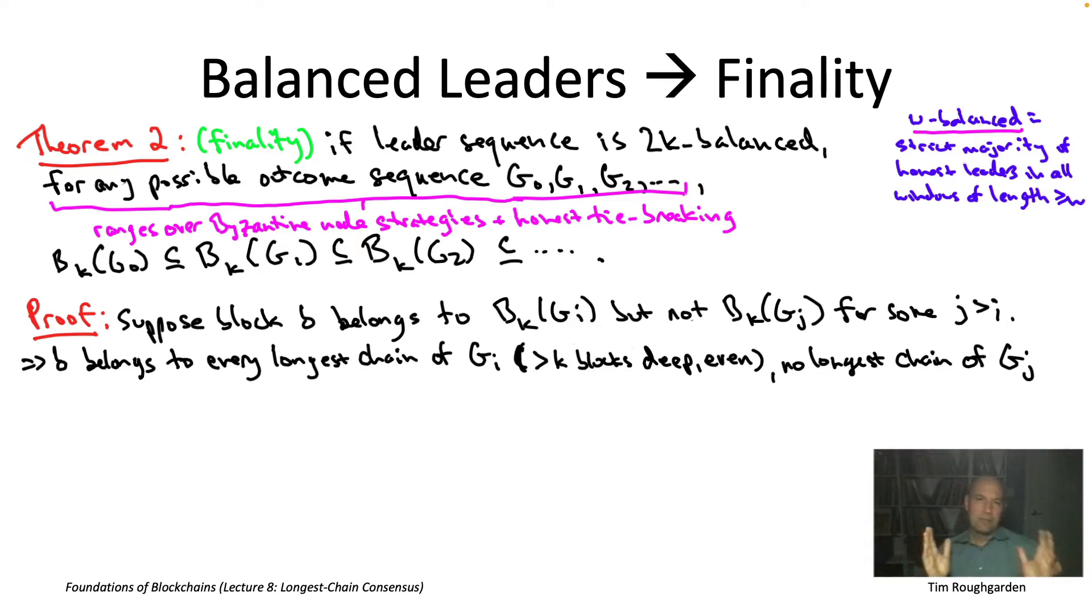Now, I want you to think about the sequence of entries beginning with g sub i and concluding with g sub j. For each entry in the sequence, it has one additional block relative to the previous one. Byzantine nodes are allowed to create multiple blocks in the same round, but in our minds, we can imagine arbitrarily ordering those blocks and adding them one by one. So, we get the sequence of entries, g sub i is where it starts, g sub j is where it ends, one new block each time. Initially, little b belongs to all the longest chains. At the end, little b belongs to none of the longest chains.